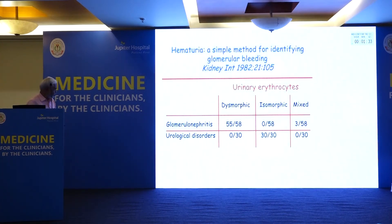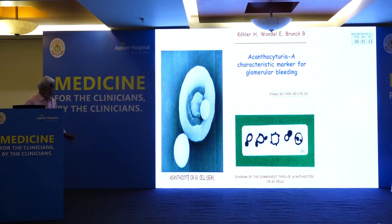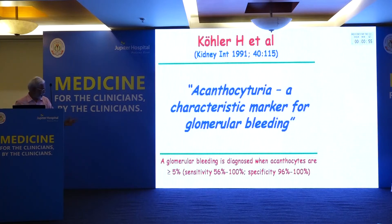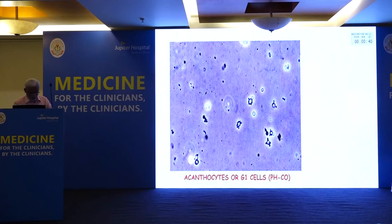Reference studies show that out of 58 glomerular disease patients, 55 had dysmorphic RBCs; zero had isomorphic RBCs. In urological disorders, all 30 had isomorphic RBCs — this is a very good test. Another marker is acanthocytes: when RBCs pass through the glomerular filter and tubule, osmotic changes alter their size and shape. Acanthocyturia is a characteristic marker of glomerular origin, with sensitivity 56–100% and specificity 90–100%.